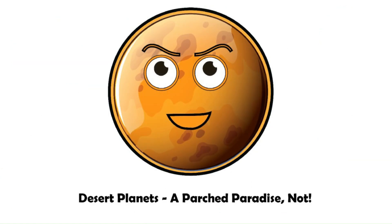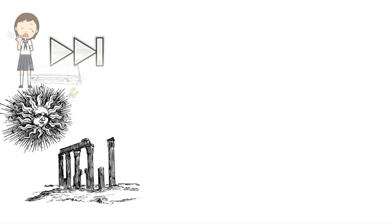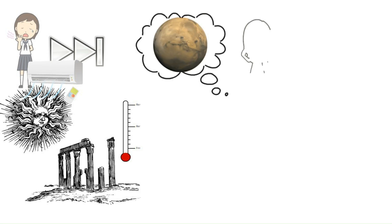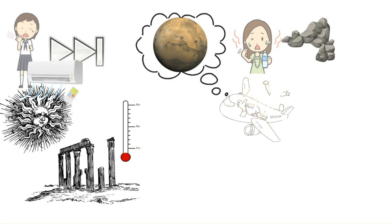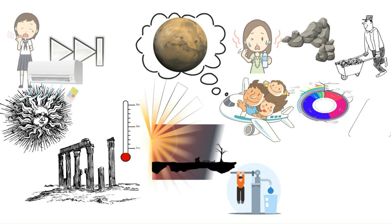Desert planets. A parched paradise. Not. Feeling parched? Skip the desert planets. These desolate worlds are sun-scorched, with no air and scorching temperatures. Imagine Tatooine from Star Wars, but way hotter and rockier. Not a vacation spot. Brutal sun rays would zap any water, leaving a barren wasteland. But even these tough planets have value. Studying their geology reveals how intense radiation shapes planets, helping us understand how rocky planets form and evolve in general.